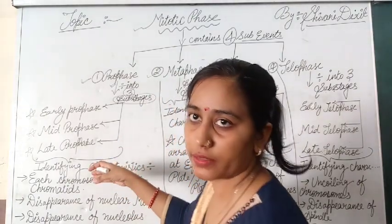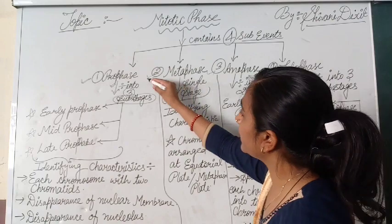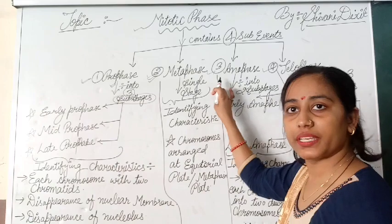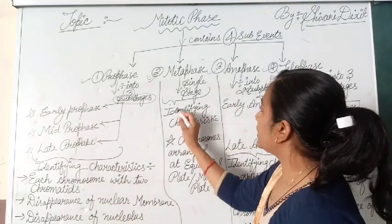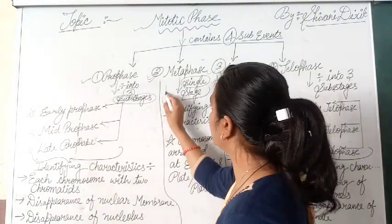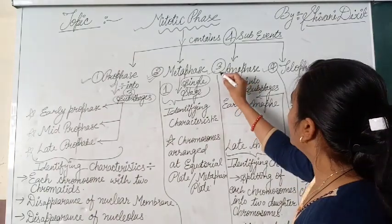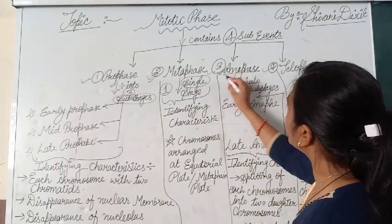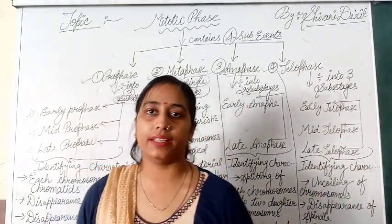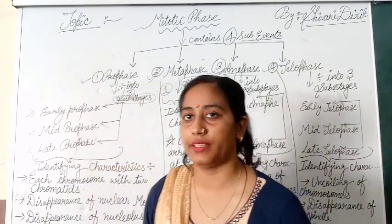We will discuss their characteristics later on. Our next mitotic phase sub-stage is metaphase. This metaphase contains only a single stage — it has only one step. Then, we will talk about anaphase. Anaphase is divided into 2 sub-stages: number 1, early anaphase, and number 2, late anaphase.